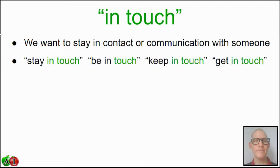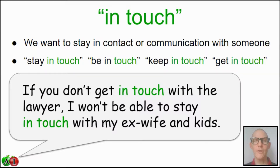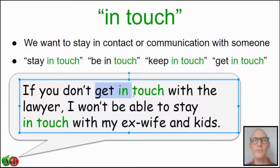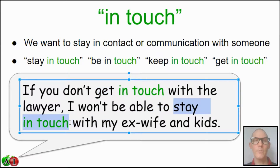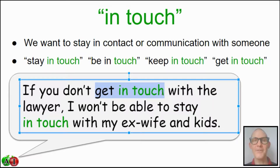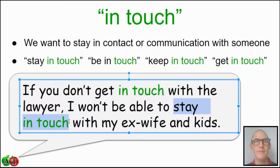Let's see an example: 'If you don't get in touch with the lawyer, I won't be able to stay in touch with my ex-wife and kids.' We have two uses here. The first uses 'get in touch' — you need to make contact with the lawyer. And if you don't, then I won't be able to stay in touch — to maintain communication with my ex-wife and kids. You need to call, text, or email the lawyer to get in touch.